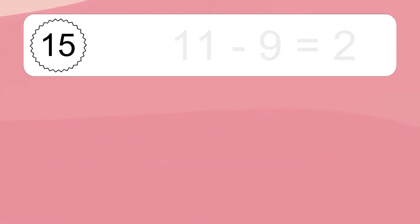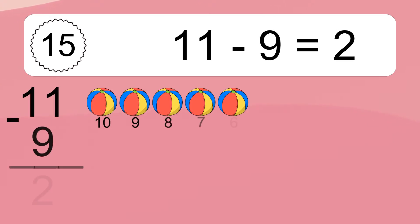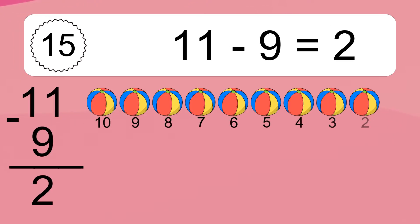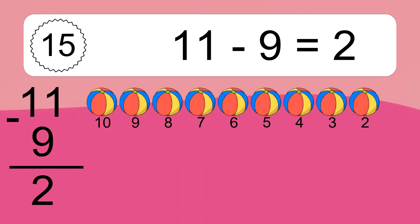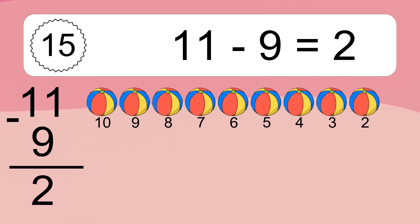11 minus 9 equals what? 11 minus 9 equals 2. Let's count it: 10, 9, 8, 7, 6, 5, 4, 3, 2.